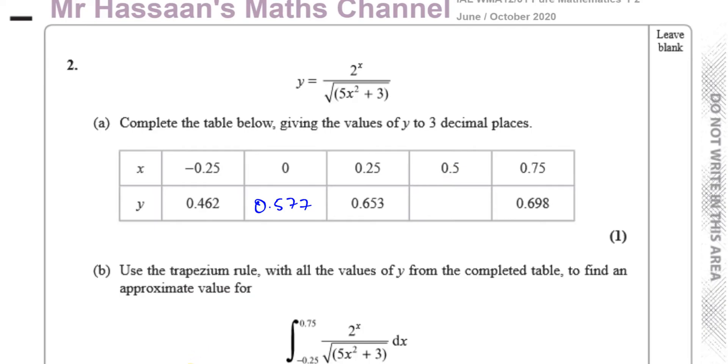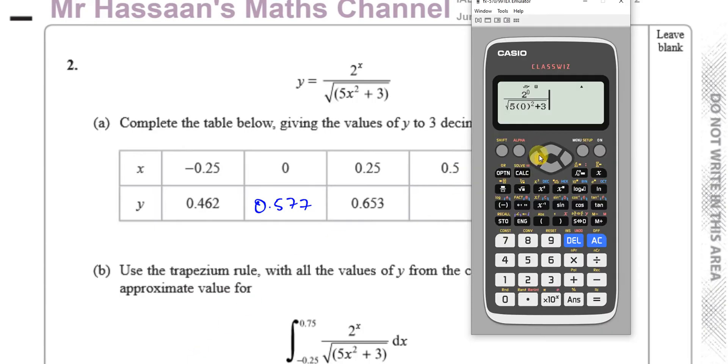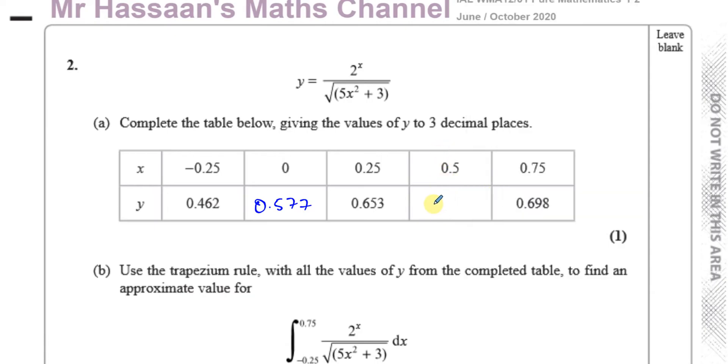Then I've got to do the same thing with 0.5. So everywhere where I put x, which was in this place and that place where the 0s are, I have to replace them with 0.5. That's 0.5 there and 0.5 there. And that gives me 0.686 to 3 decimal places. So there's the answer to part A.